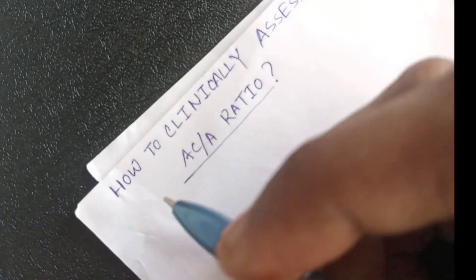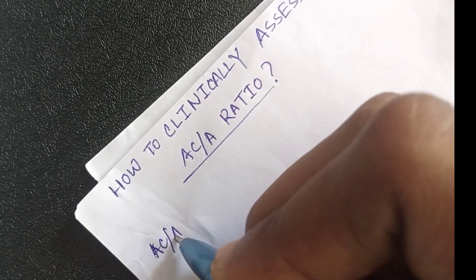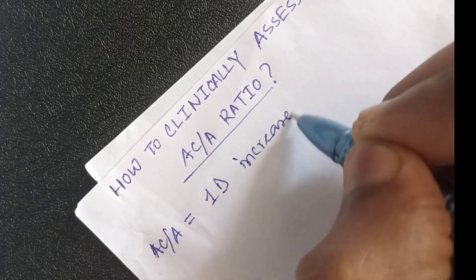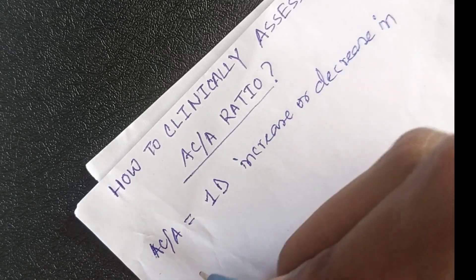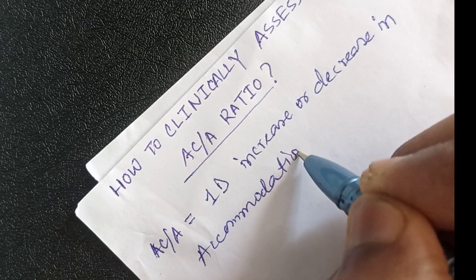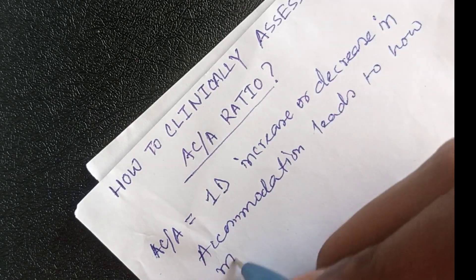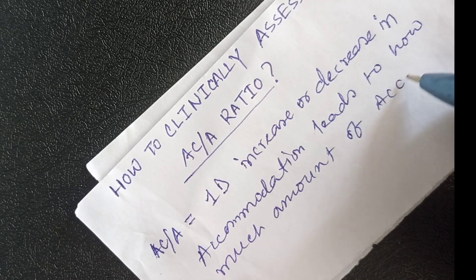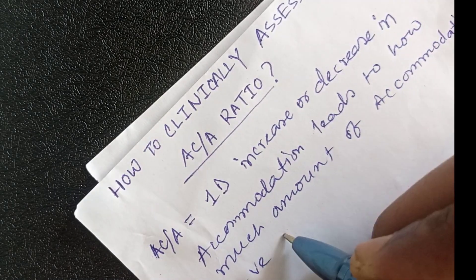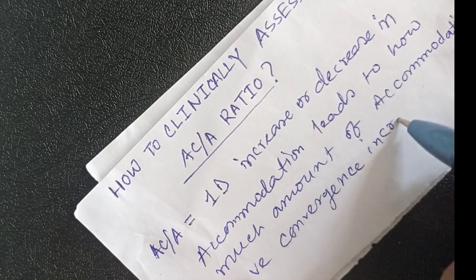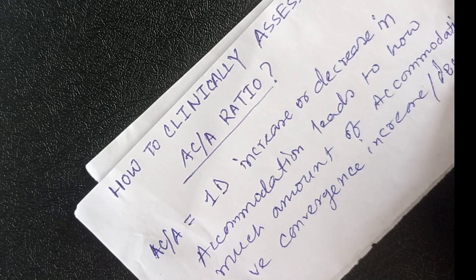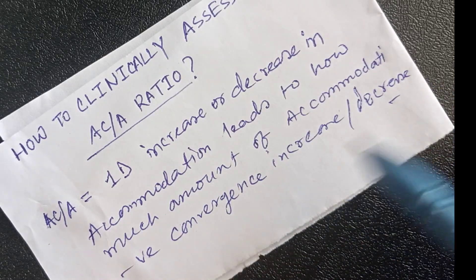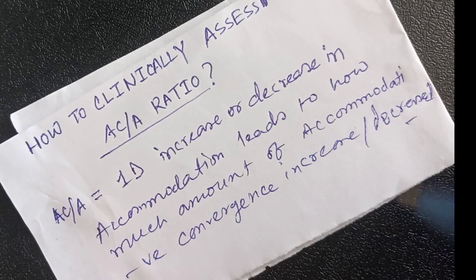So what does the AC/A ratio mean? The AC/A ratio equals — it implies that one diopter increase or decrease in accommodation leads to how much amount of accommodative convergence increase or decrease. This is the definition of the AC/A ratio.